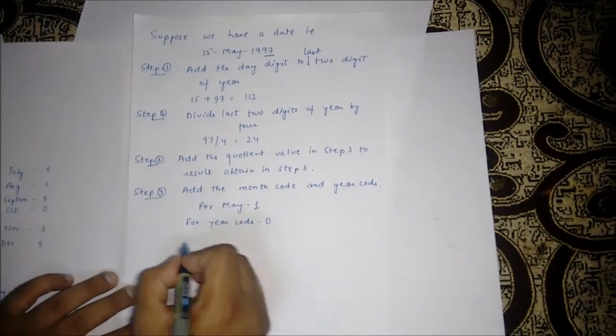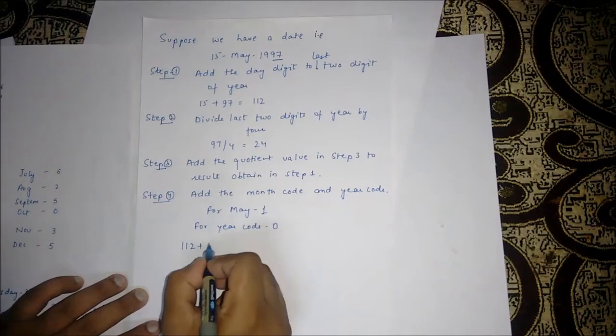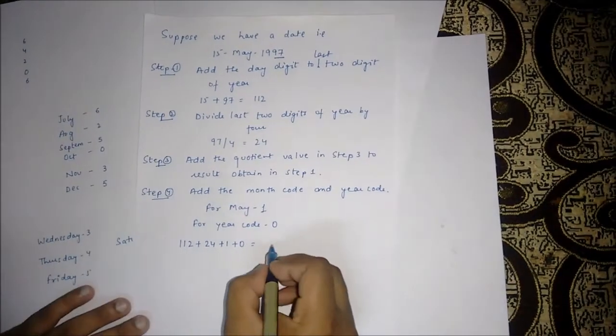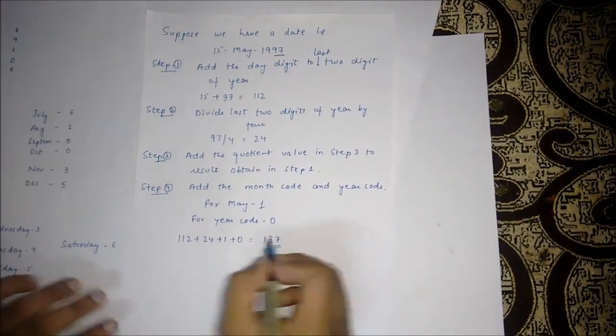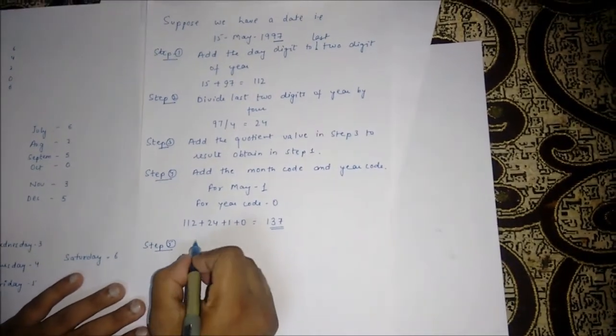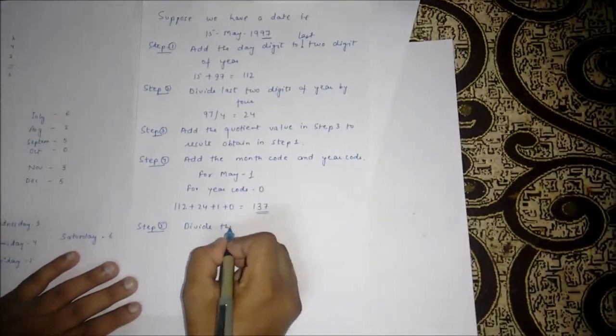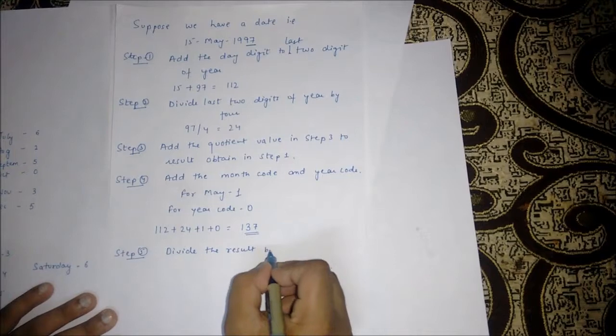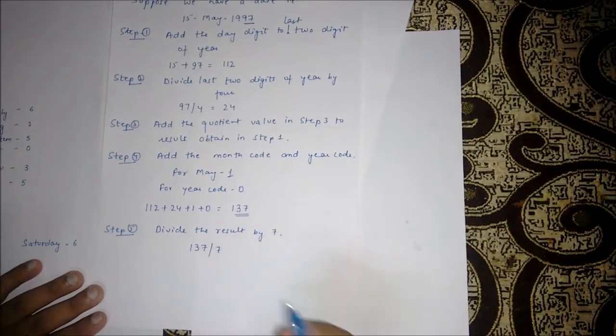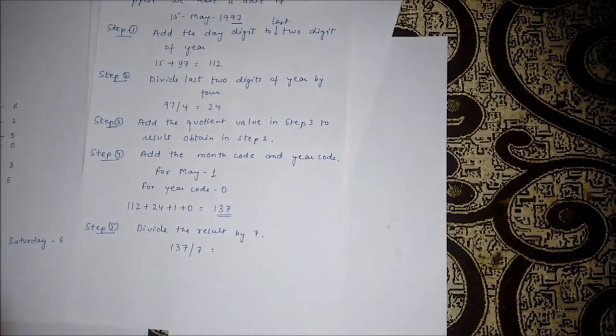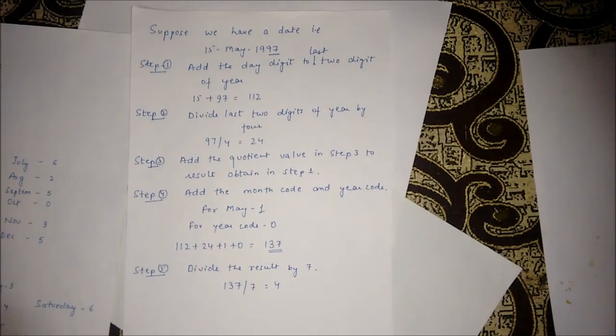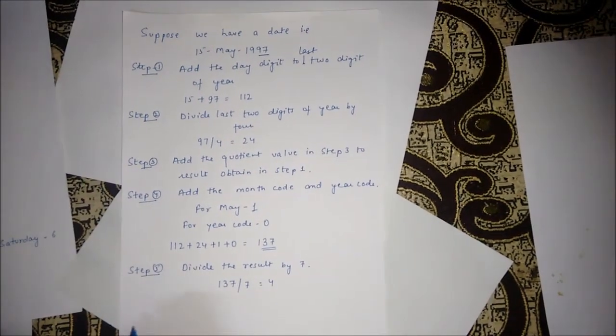Add all the values: 112 plus 24 plus 1 plus 0. We get 137 as an answer. Step 5: divide the result by 7. That is 137. We get the remainder as 4.